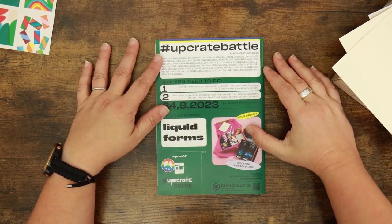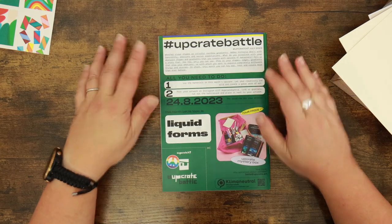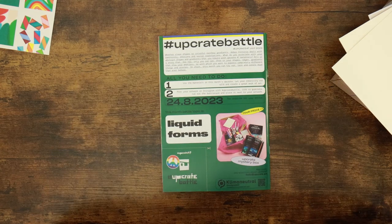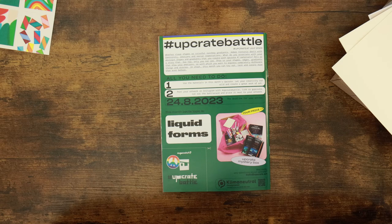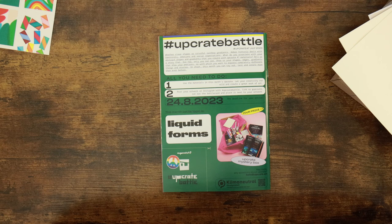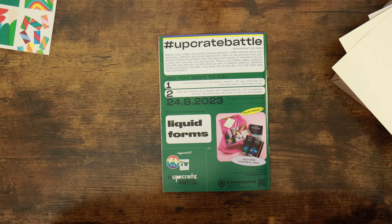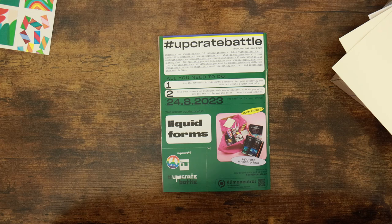Let's turn over the page then. And the battle topic is liquid forms. There's a surprise. Whether clear shapes or colorful rainbow gradients, Amber Vittoria deals with femininity, emotions, and social expectations. What do you associate with your abstract shapes and gradients that create with upcrate 47? Tell us a story that for now only you can see. In short, this month you can try out, test and create more than ever before. They're a really open-ended box.